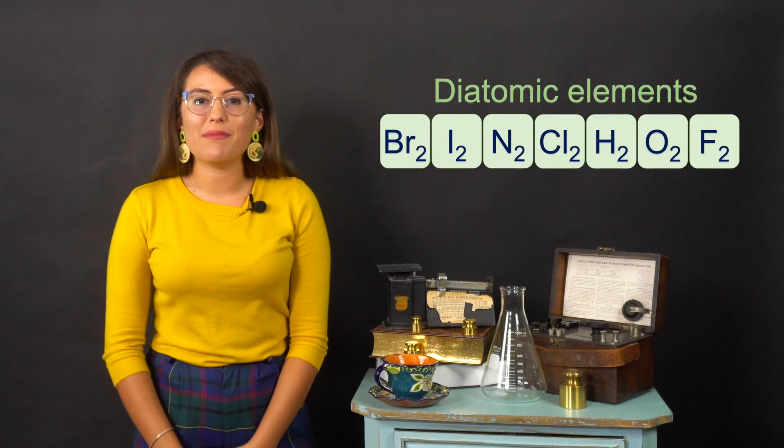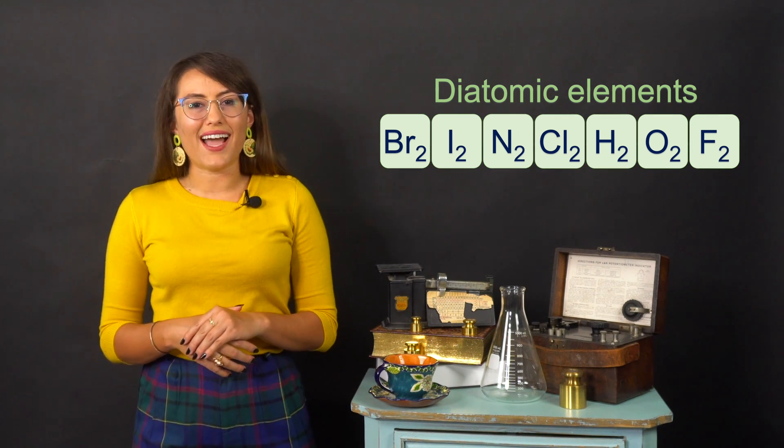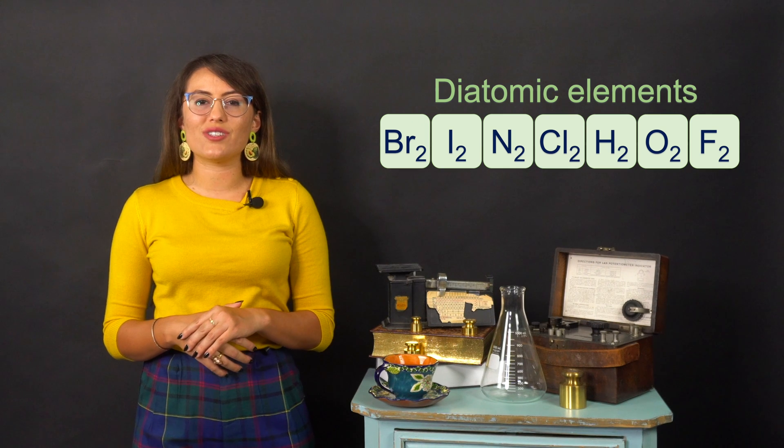Some elements are diatomic, meaning that in their elemental form they exist as pairs of atoms. These elements include bromine, iodine, nitrogen, chlorine, hydrogen, oxygen, and fluorine.